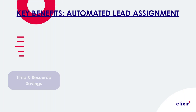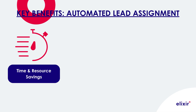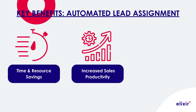By removing the manual and administrative responsibility of your internal sales manager to distribute leads, valuable time and resources are saved. The automated lead assignment process ensures that leads are assigned to the appropriate sales rep based on their industry, product, or regional expertise. With a structured lead distribution process in place, sales reps receive leads aligned with their specific areas of responsibility, allowing them to focus their time, energy, and expertise on leads most likely to convert — resulting in increased productivity and higher chances of closing deals.